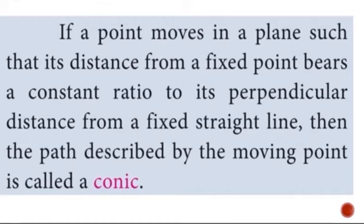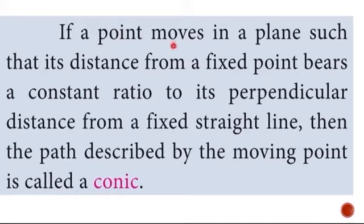Conics is the locus of a point. If a point moves in a plane such that its distance from a fixed point has a constant ratio to its perpendicular distance from a fixed straight line, then the path described by the moving point is called a conic. The movement of a point should maintain a constant ratio between a fixed point and a fixed straight line.